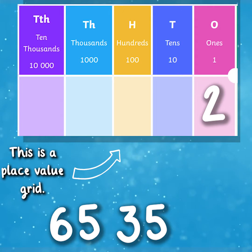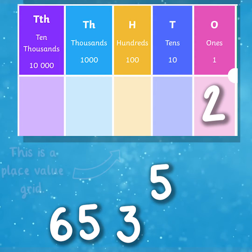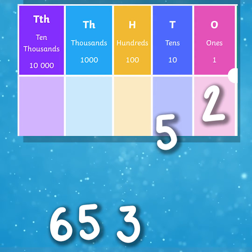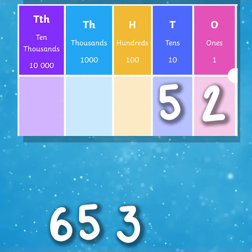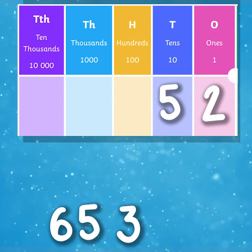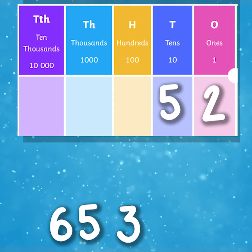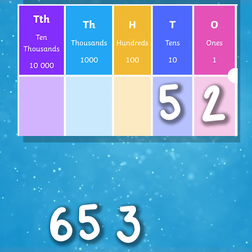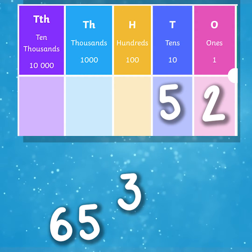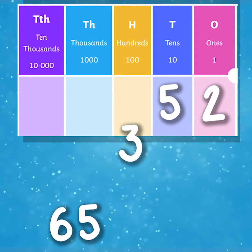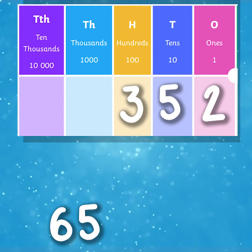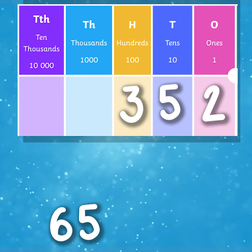Moving over, we can see that there is a 5 in the tens column, which tells us that we have five tens. Moving over again, we can see that there is a 3 in the hundreds column. This means there are three hundreds.